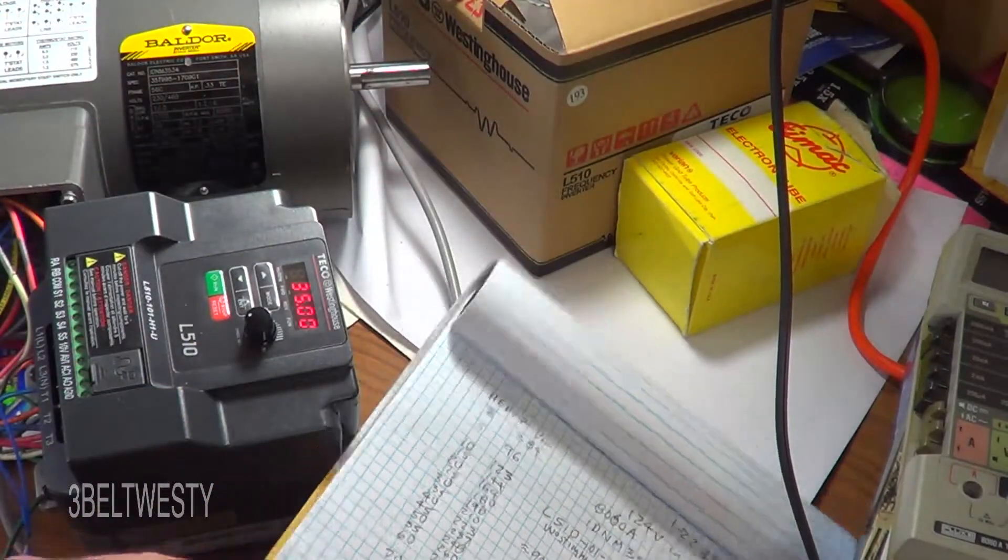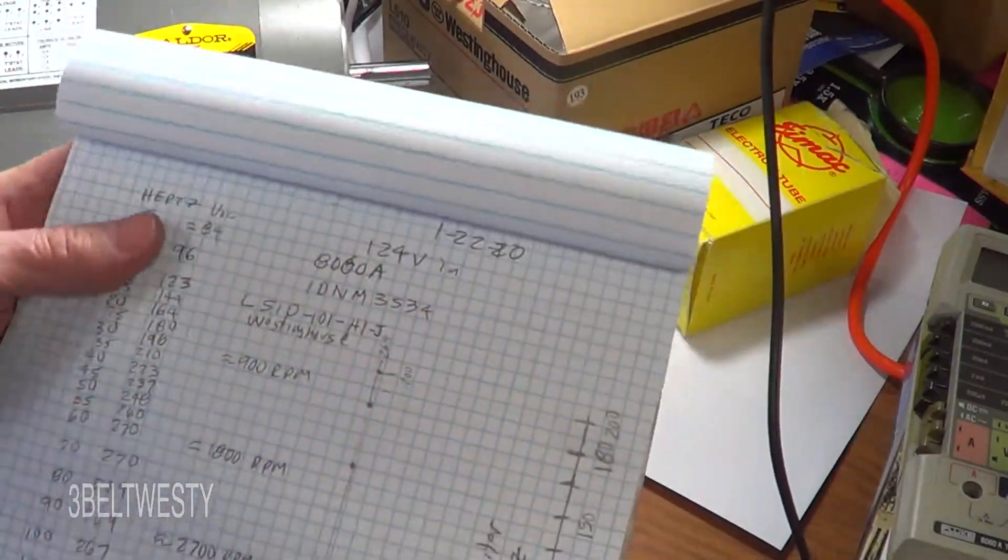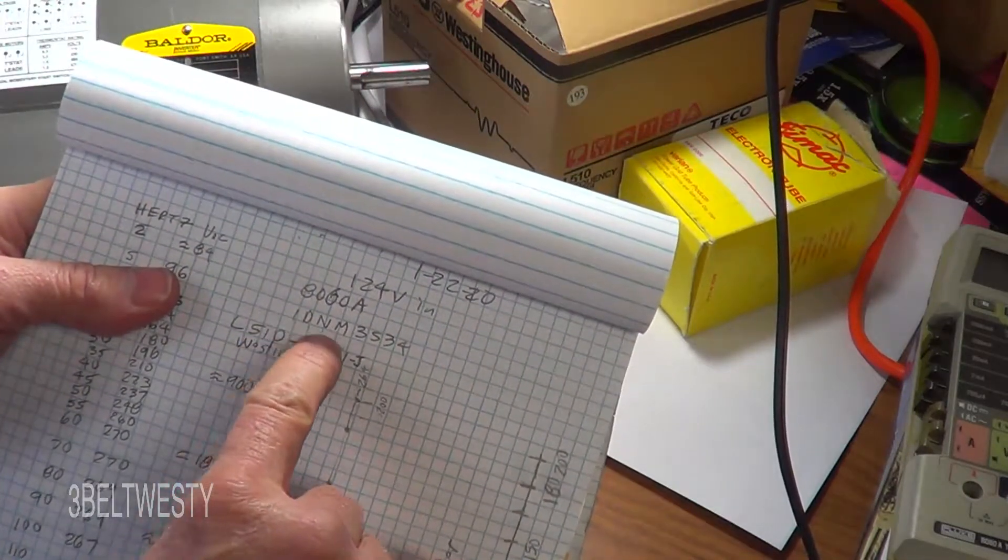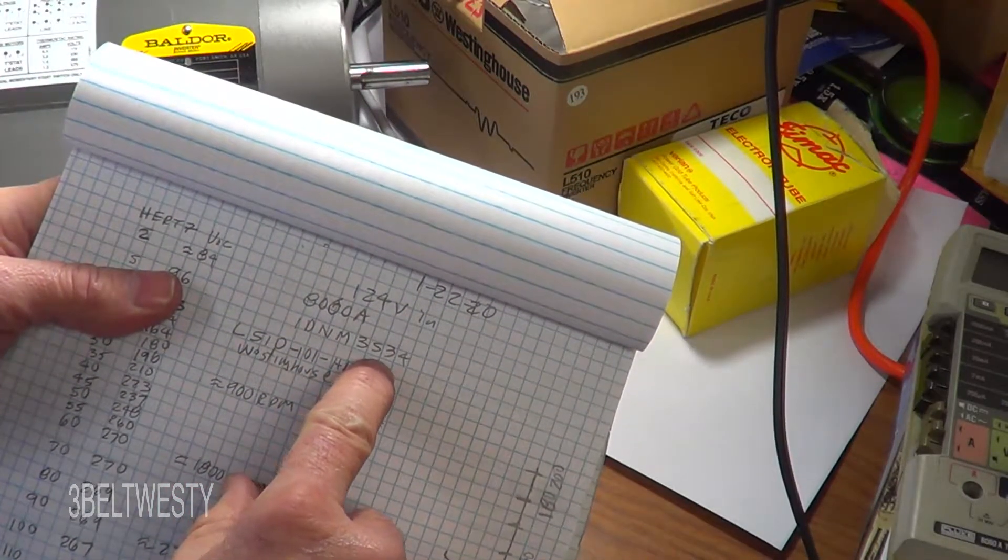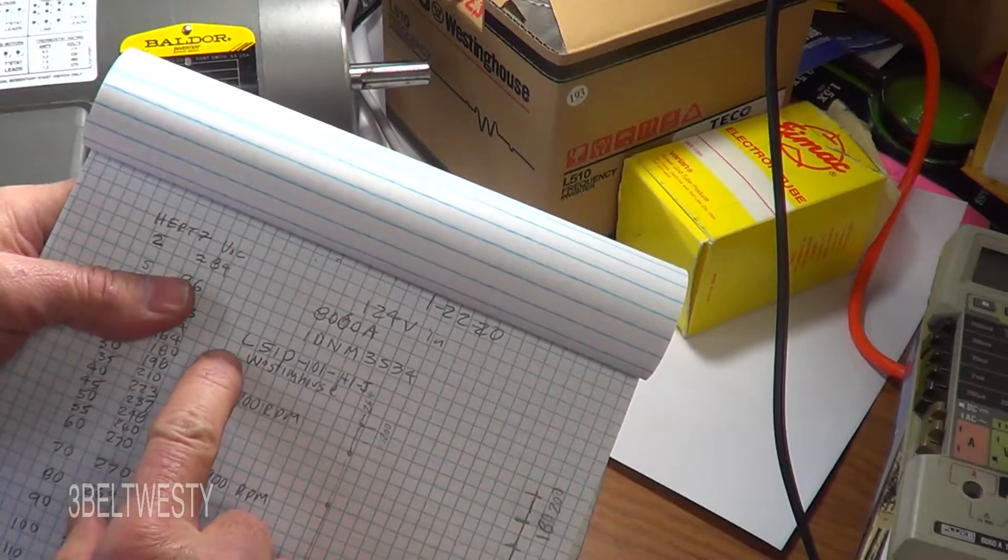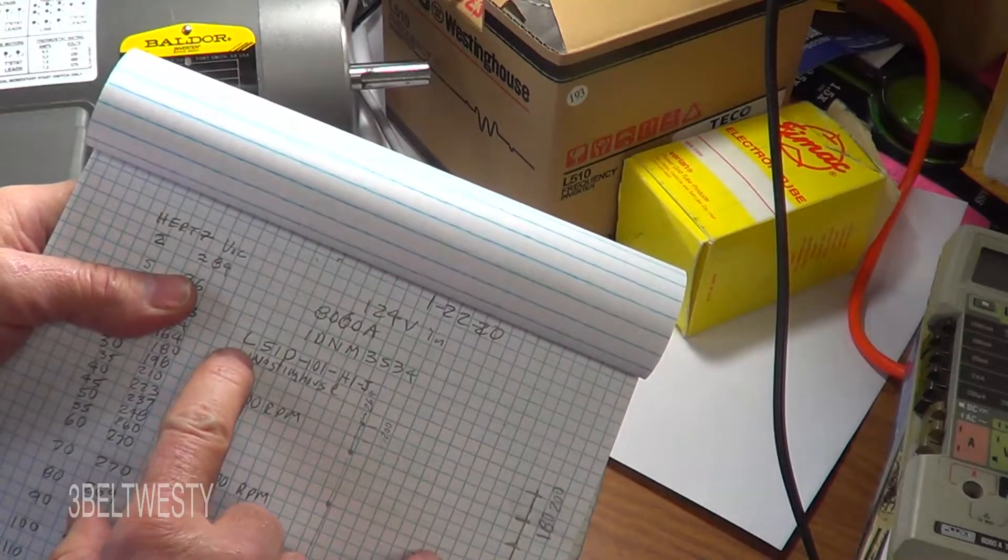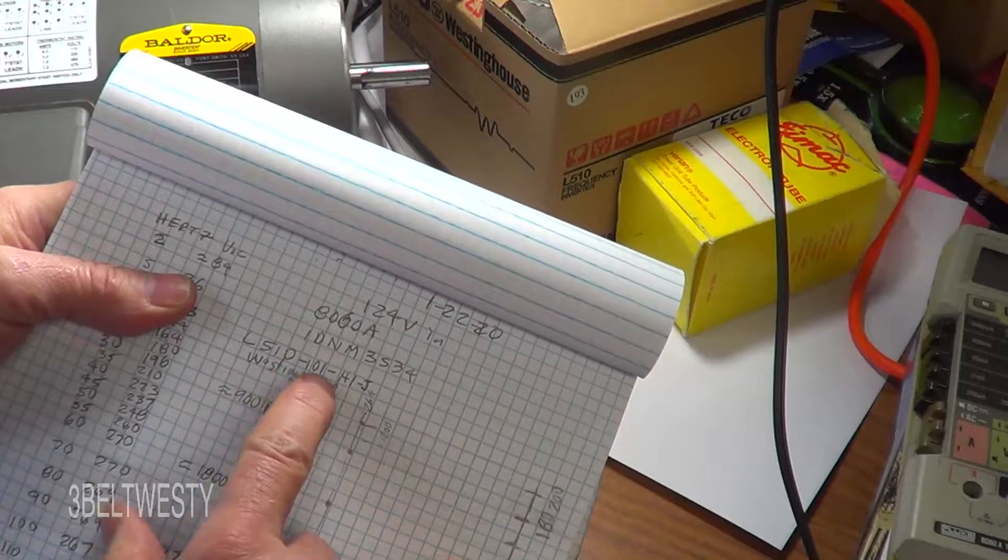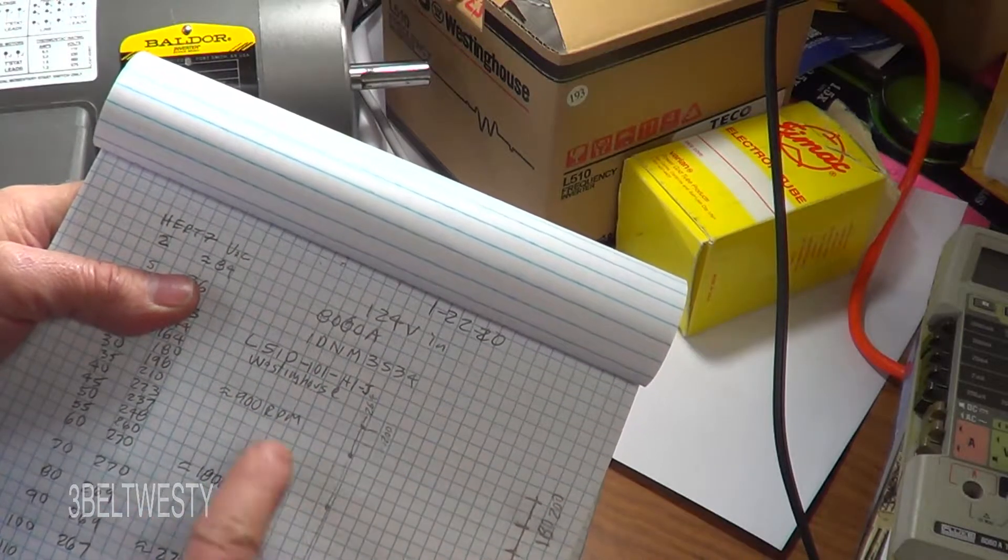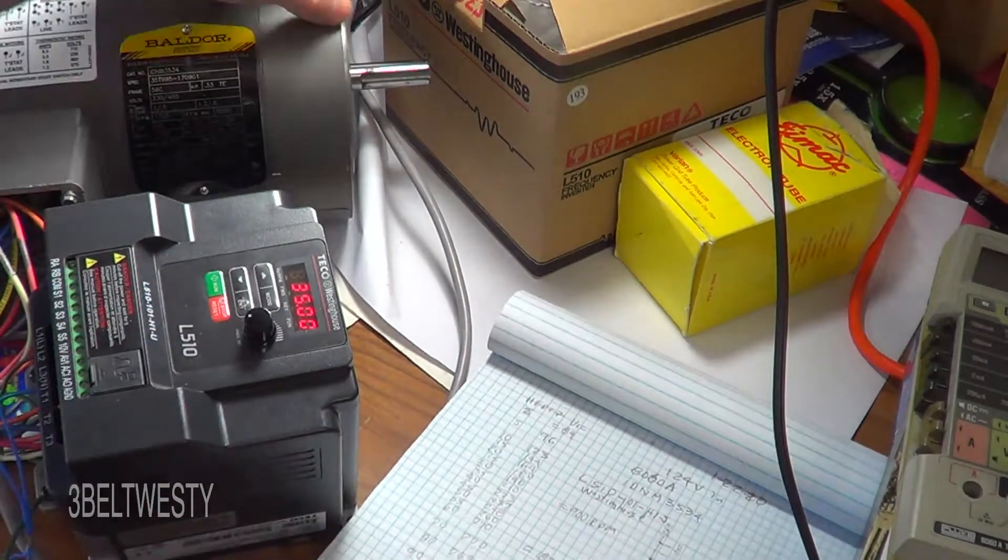I'm going to go ahead and run this thing. Here's the model numbers - this motor is an IDNM3534, it's a third horsepower. The inverter is 110 volt input, it's a 510-101-H1-J Westinghouse Tico.